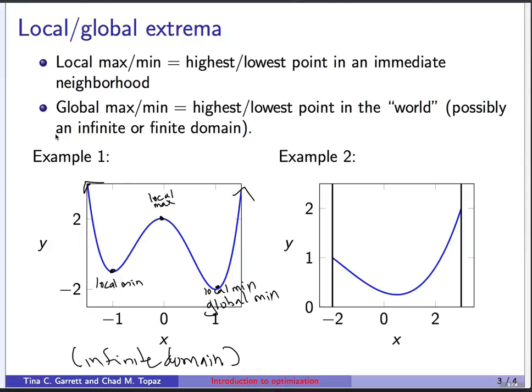For the second example here, this is actually a finite domain, and I've tried to indicate very clearly the domain on which it's defined with these black vertical bars here. So this function we're only thinking of as being defined between negative two and three. And we can again try to find the local and the global extrema.